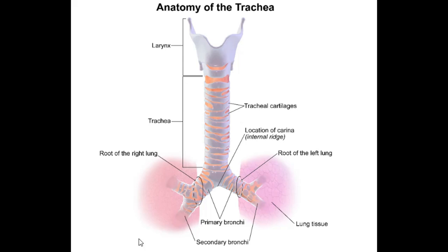The terminal bronchioles branch out to form respiratory bronchioles, which can be identified under a microscope because they have alveoli extending into their lumen. The alveoli are tiny air-filled pockets with thin walls; their epithelium is simple squamous epithelium, and they are the main site of gaseous exchange in the lung.